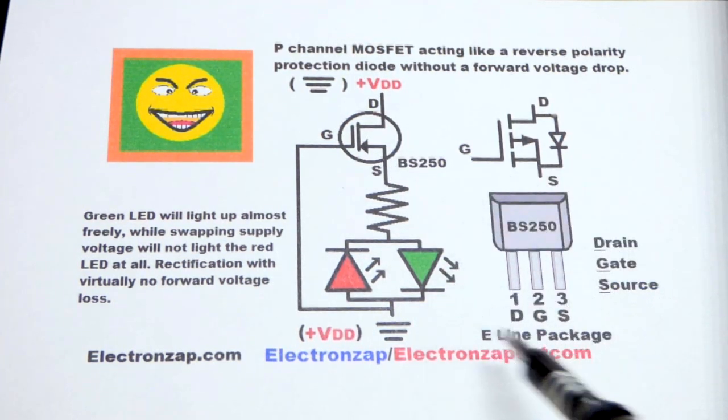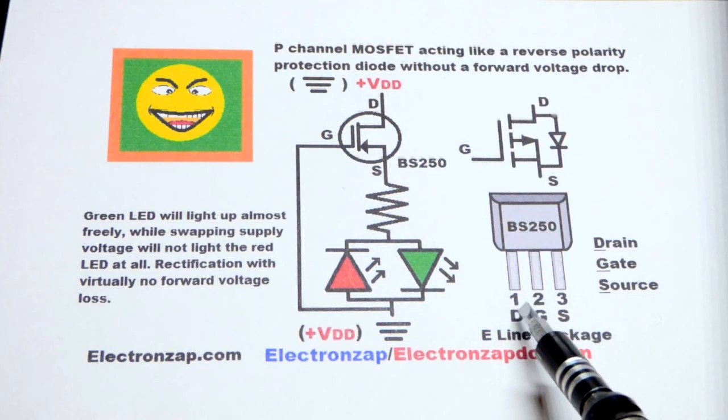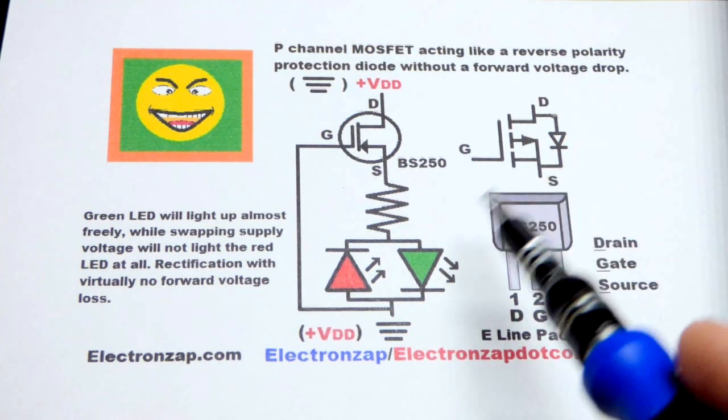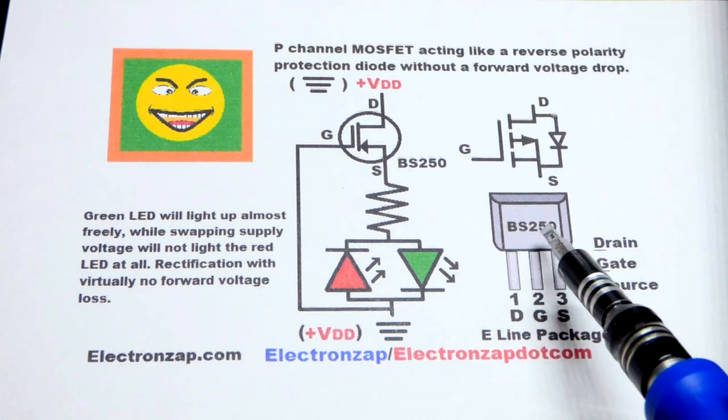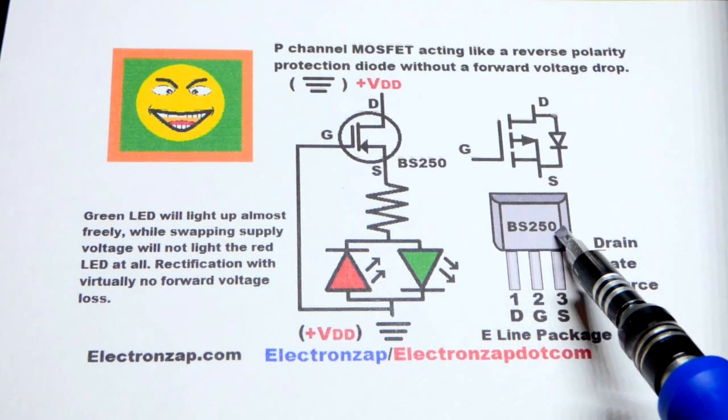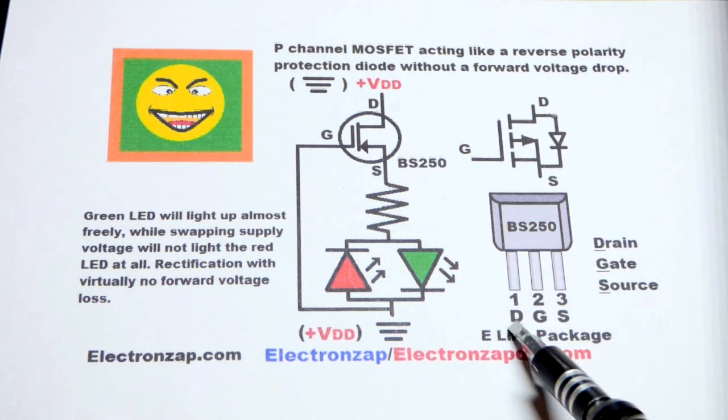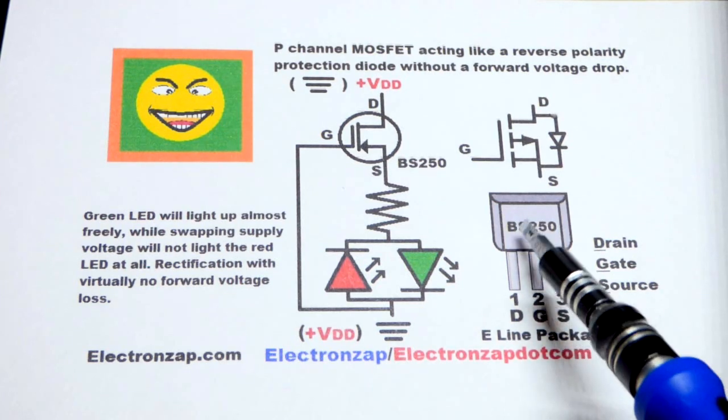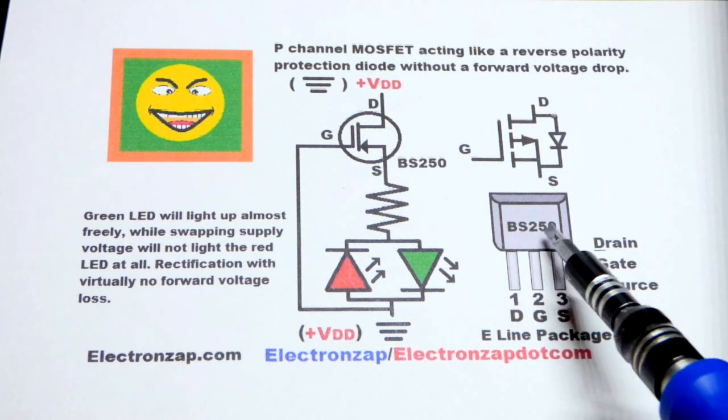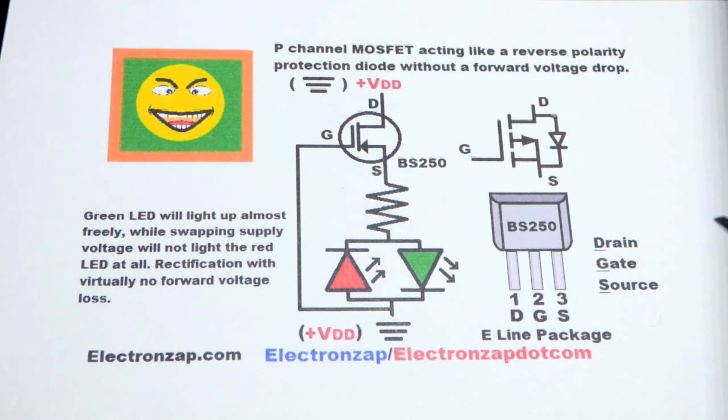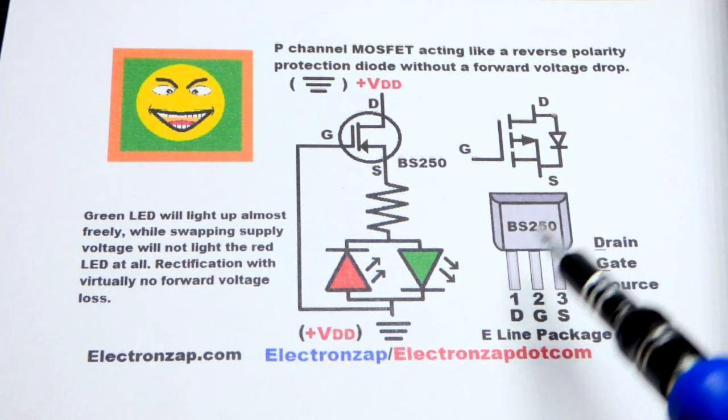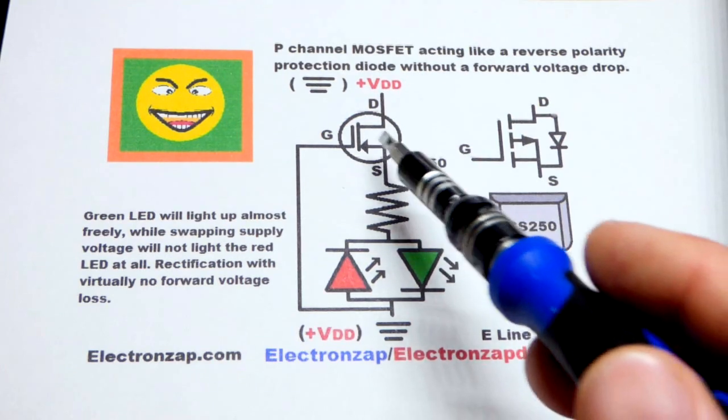Here is the pin layout right there. You've got to look up the part number and look at the data sheet. We have the BS250 in the E-Line package: left pin is drain, middle pin is gate, right pin is source. That's the same pin layout for the TO92, the regular looking transistor version.